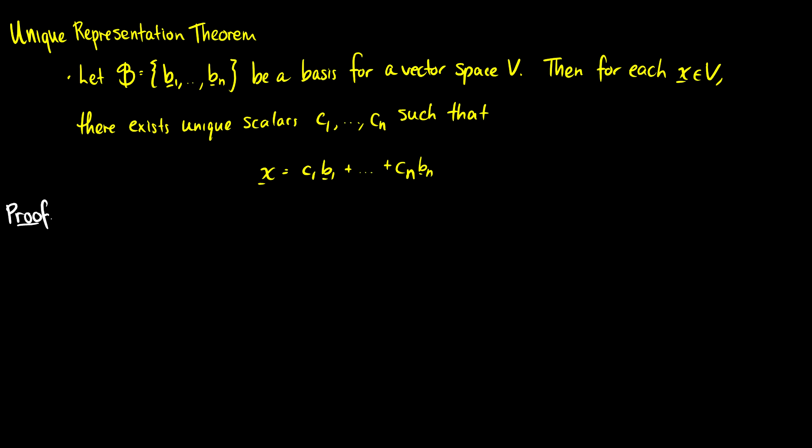The unique representation theorem states: if b is a basis for vector space v consisting of vectors b1 through bn, then for each vector x in v there exist unique scalars c1 through cn such that x is a linear combination of these scalars and vectors in the basis b.